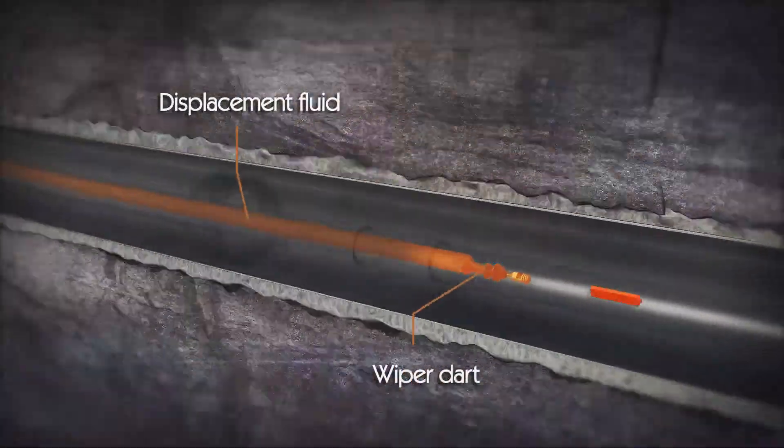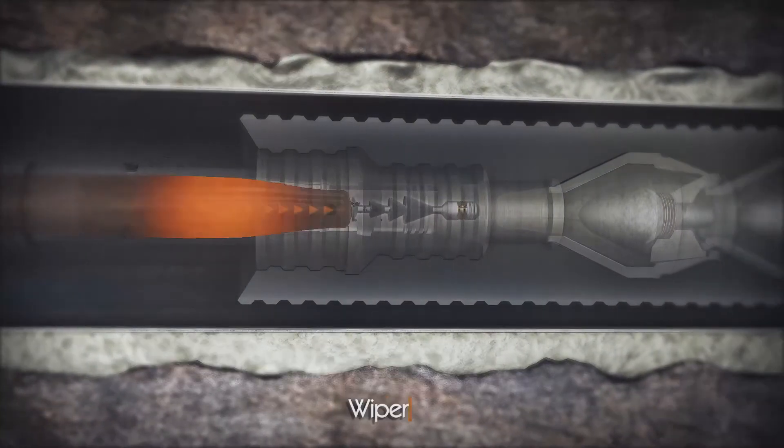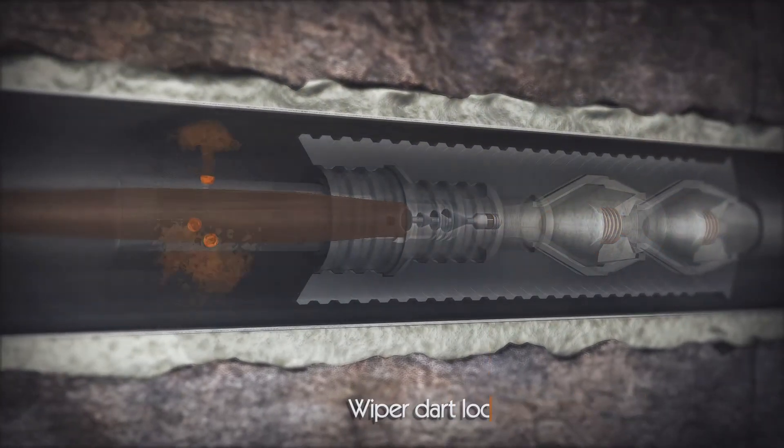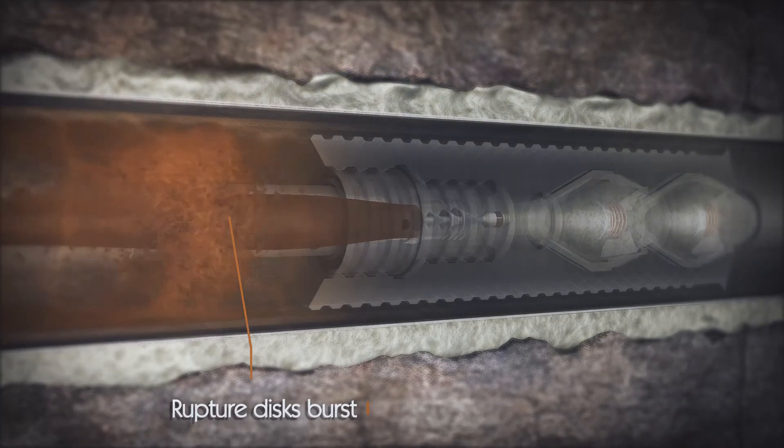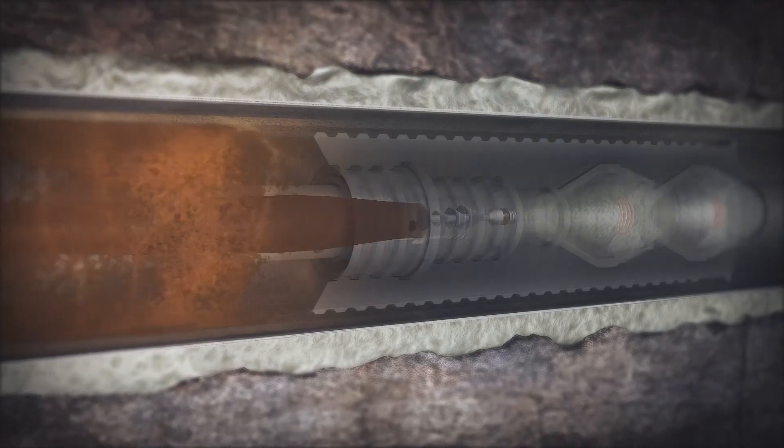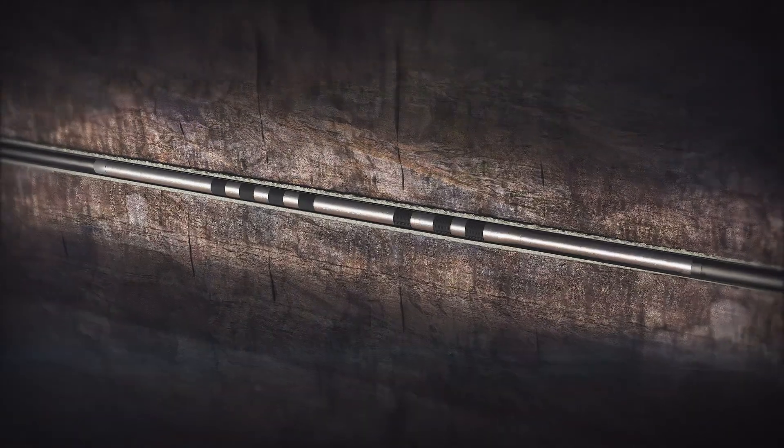Following the cement job, a wiper dart is launched and displaced through the string, which lands and locks into the C-Cure float collar, allowing the burst discs to be pressure ruptured, after which the buoyant chamber is flooded.